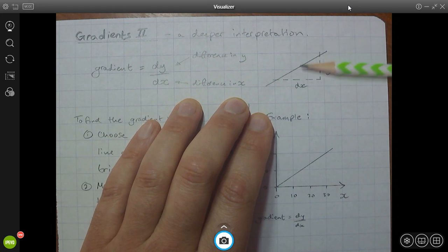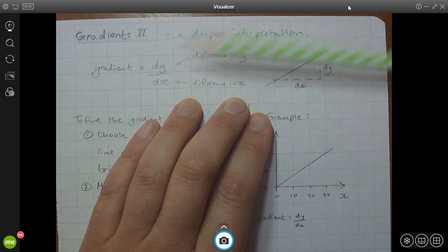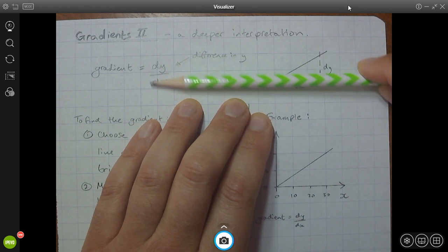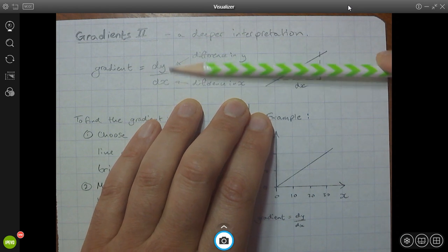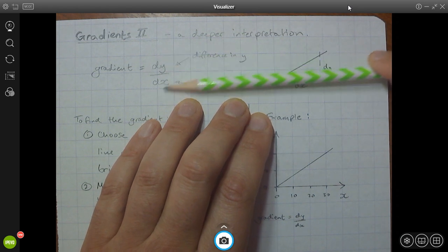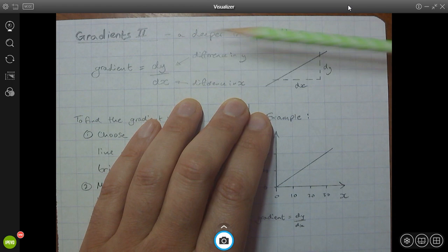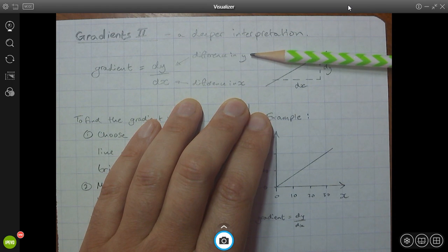So at the top here, we've got that the gradient is equal to dy by dx. Now, dy by dx is something that is useful to know about in maths for many years to come, particularly if you take it much further. But simply, dy stands for the difference in y, and dx stands for the difference in x.